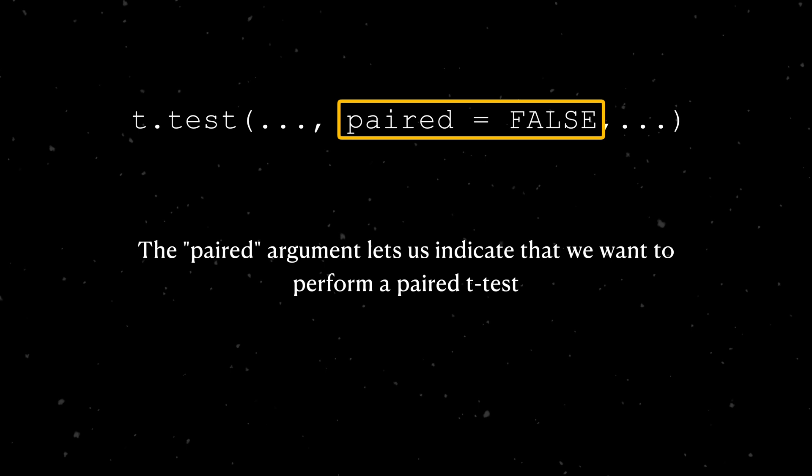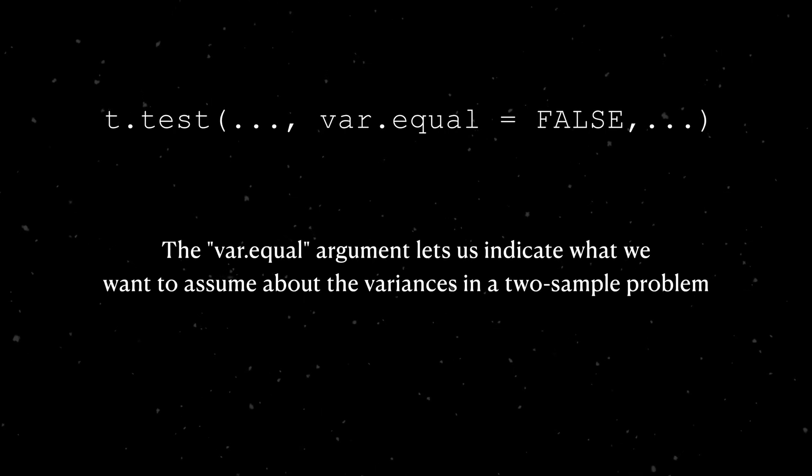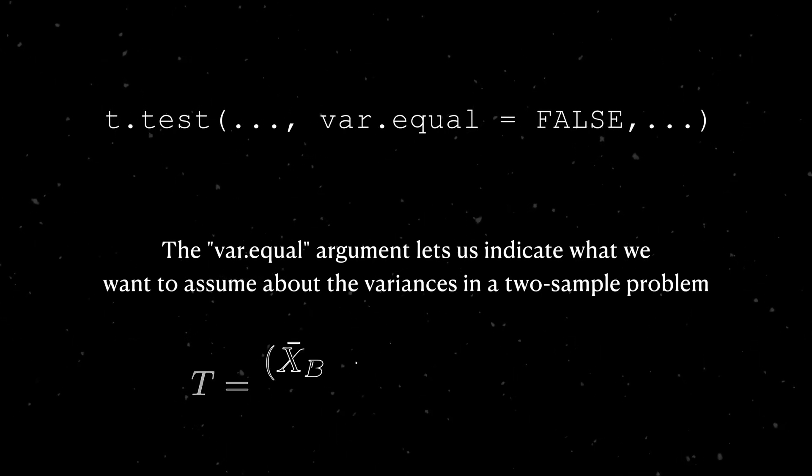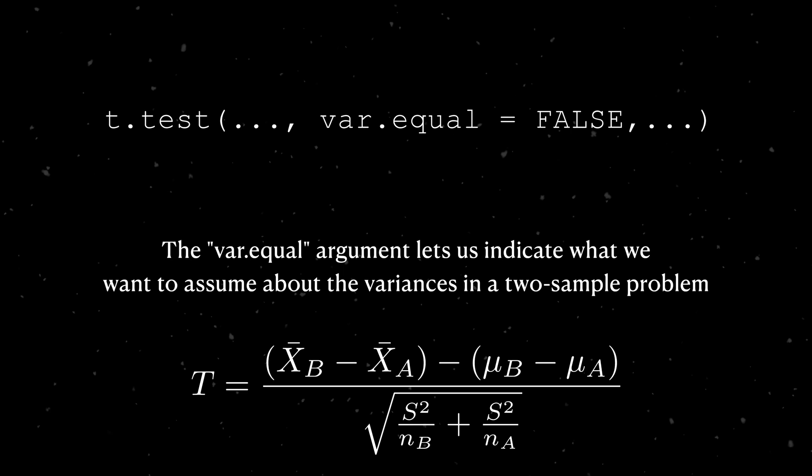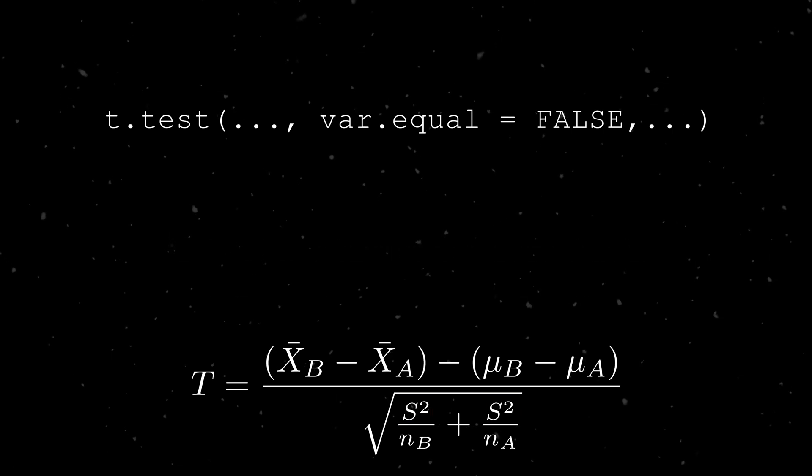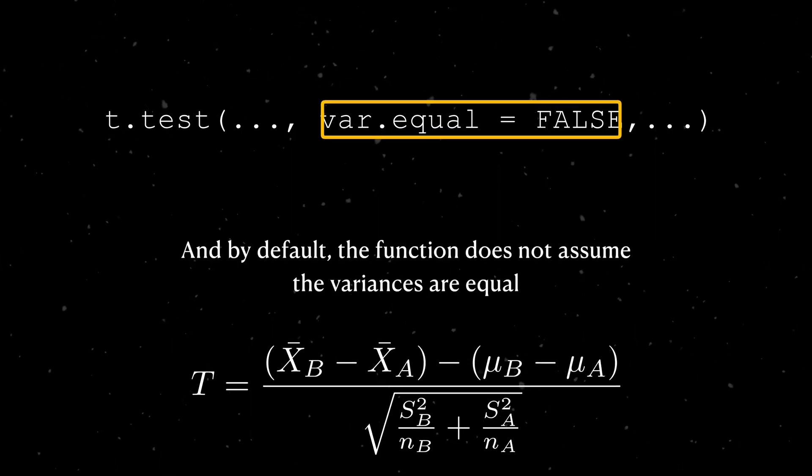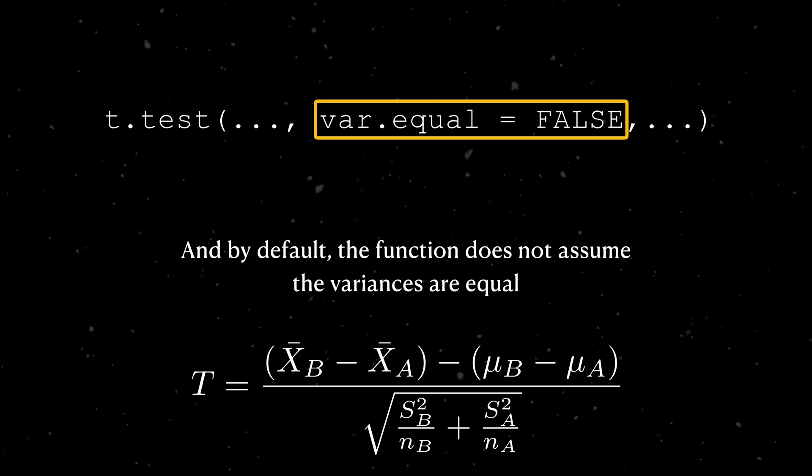We can indicate that we want to perform a paired t-test in the paired argument, which has a default value of false. The var equal argument takes a logical value and tells the function what we'd like to assume about the variance of the two groups. True indicates that we'd like to assume the variances are equal, and false indicates that we don't want to assume this. By default, the function assumes that two groups don't have the same variance, so keep that in mind.